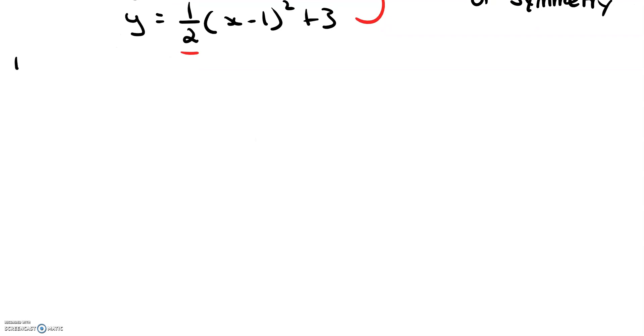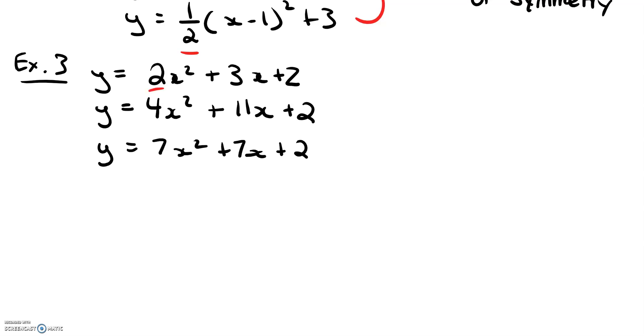And lastly, let's look at a third example. In example three, I have: y equals 2x squared plus 3x plus 2, y equals 4x squared plus 11x plus 2, and y equals 7x squared plus 7x plus 2. So I know that these quadratic functions are written in standard form, and I can deduce that because my values of a and b are being varied, this forms a family of parabolas with the same y-intercept.